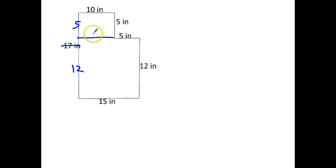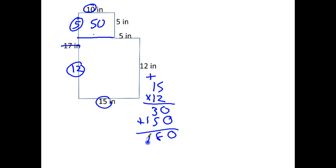So now when I start doing this, I see right away that I got 5 times 10 up here, which is 50. And down here on the bottom I have 12 times 15, which I may have to work out. 10, 30, 5 and a 1, 180. And then if I add my two areas together, 180 plus 50, I get 230.